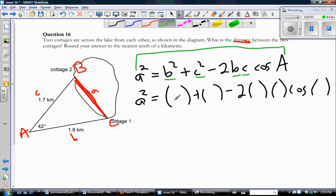Okay. So, what are my values? B is 1.8, C is 1.7, and angle A is 42 degrees. So, make sure your calculator is in degree mode. And do the math.